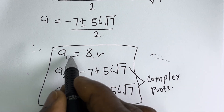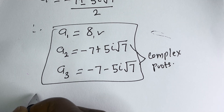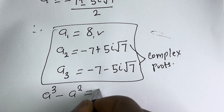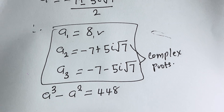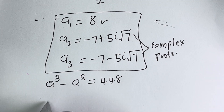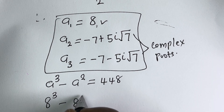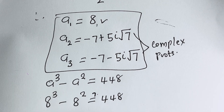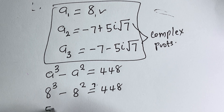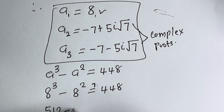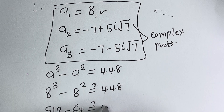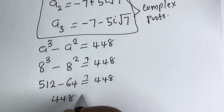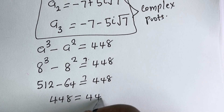To check, we use the real root A=8 in the original equation A³ minus A² equals 448. When A=8: 8³ minus 8² must equal 448. That is 512 minus 64, which equals 448. This equals 448, which is true.